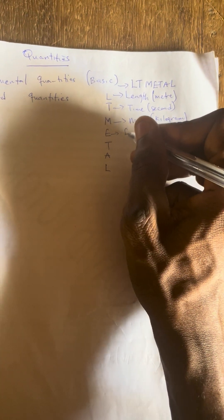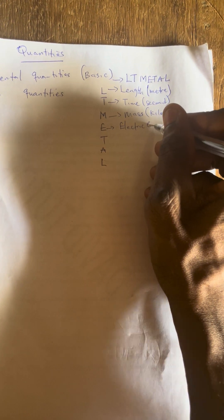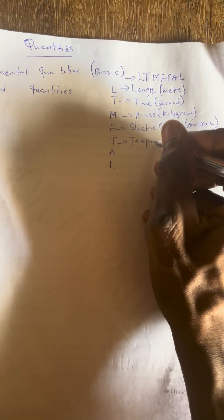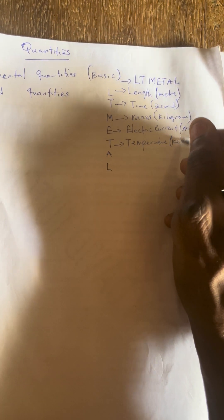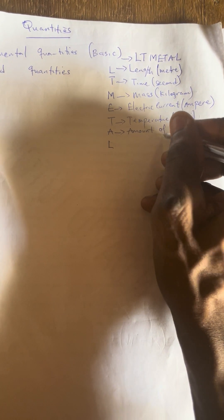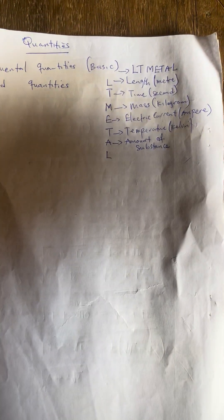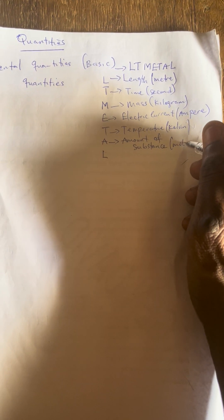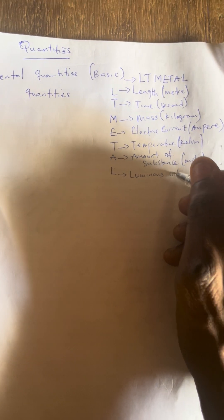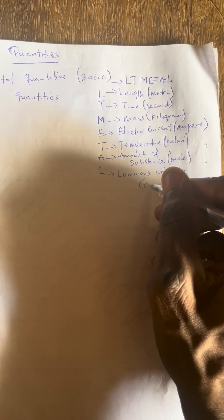We have E to be electric current, and the unit of electric current is ampere — so it's measured in ampere. We have T to be temperature, and temperature is measured in Kelvin. It can also be measured in Celsius. A means amount of substance, and amount of substance is measured in mole. And we have L to be luminous intensity, and the unit for luminous intensity is candela.